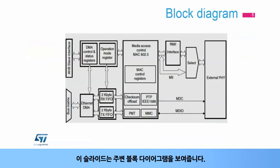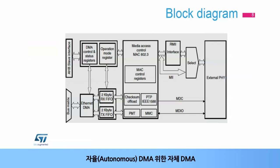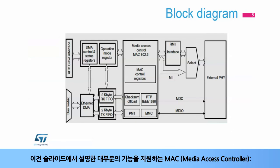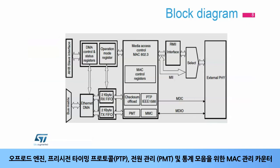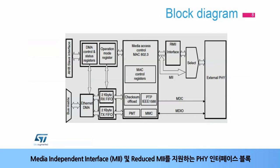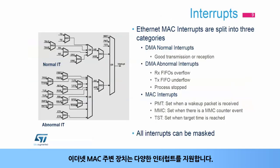This slide presents the peripheral block diagram. The Ethernet peripheral embeds its own DMA for autonomous direct memory access, internal FIFOs for RX and TX queues for data flow management, a media access controller, or MAC, supporting most functional features detailed in previous slides, offload engines, precision timing protocol, power management or PMT, and MAC management counters for statistics gathering, and a PHY interface block supporting MII and reduced MII.